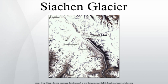The major passes on this ridge are, from north to south, Siyalat at 5,589 m, Bila Fondla at 5,450 m, and Gungla at 5,689 m. The average winter snowfall is more than 1,000 cm and temperatures can dip to -50°C. Including all tributary glaciers, the Siachen Glacier system covers about 700 km².